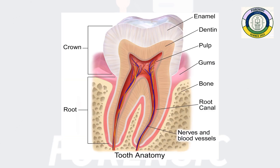Before discussing this method, let's see the tooth anatomy. This is the anatomy of the tooth. It has two anatomical parts: the crown and the root. The crown is the top part that is exposed and visible above the gum. It is covered with enamel, which protects the underlying dentine.